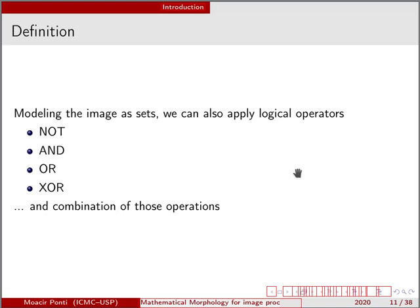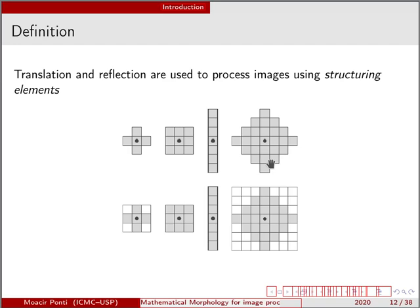Because we are modeling images as sets, we can also apply other operators such as logical operators — not and or — and combinations of those. We can use all of that to make morphological operators and then process images. In terms of mathematical morphology, the elements that we are going to use to process images are what are called structuring elements. We can draw a parallel between the structuring element and the filter in the case of convolutions.